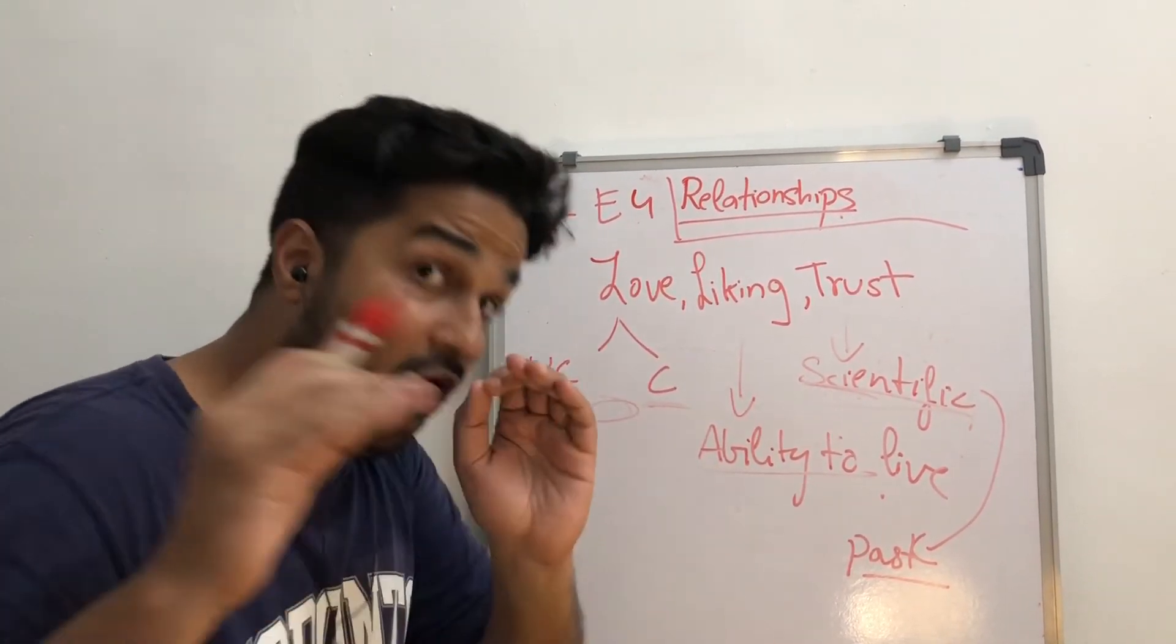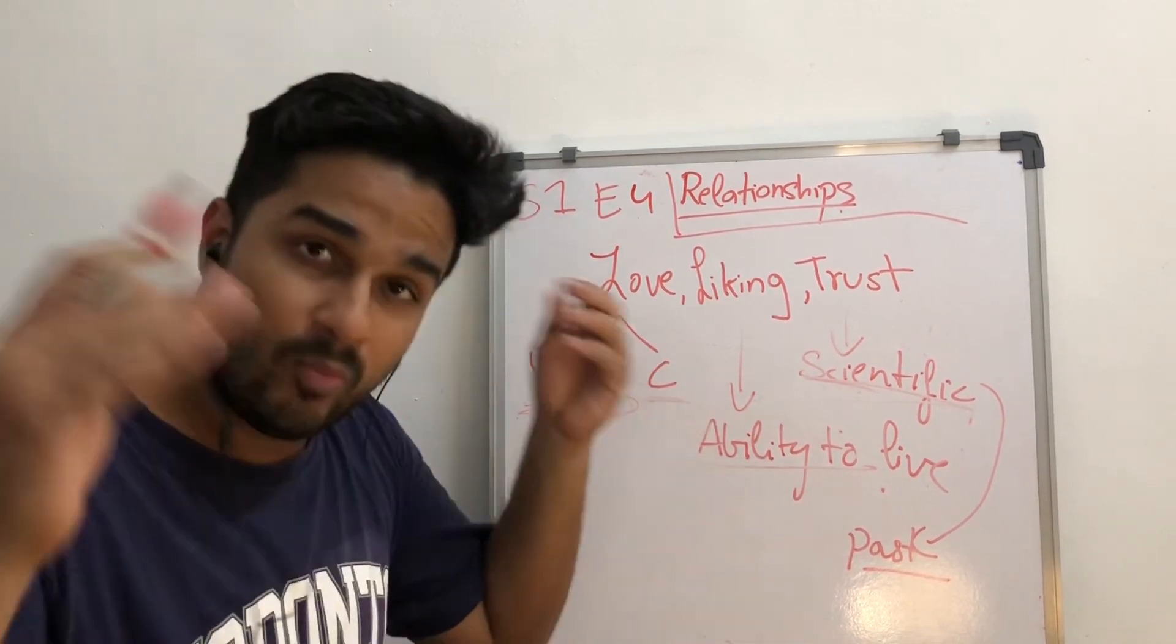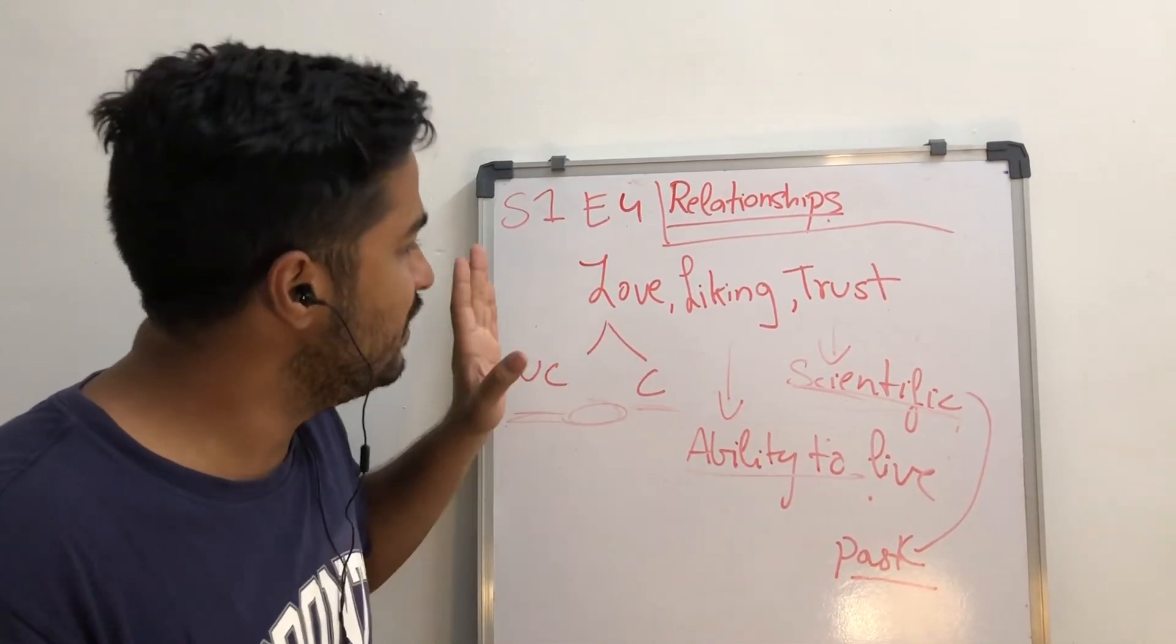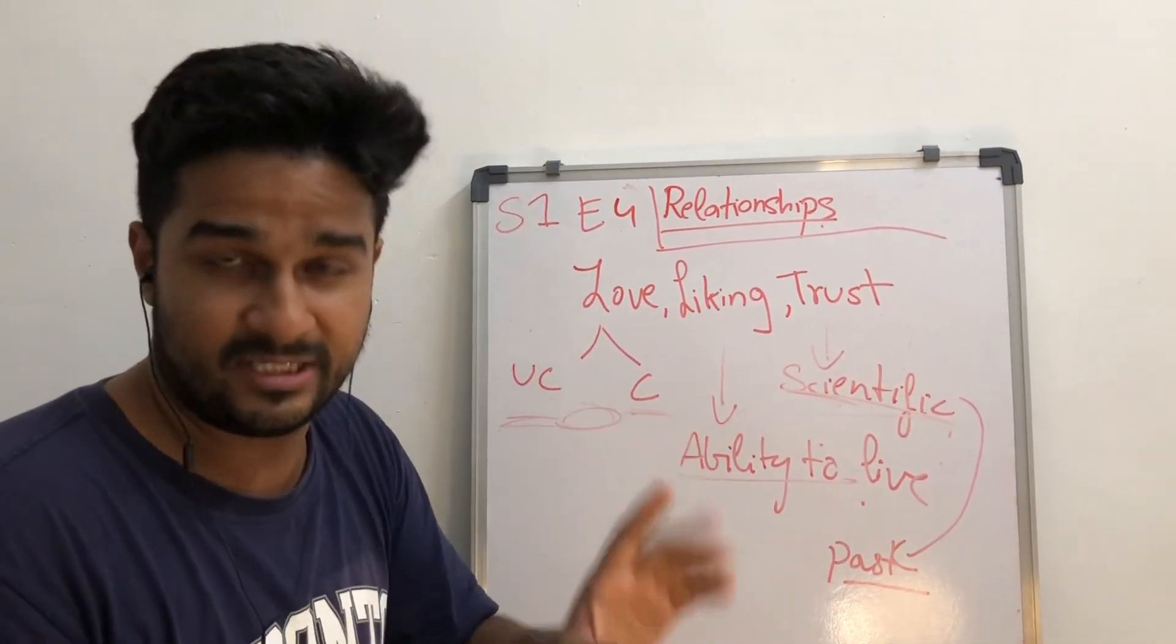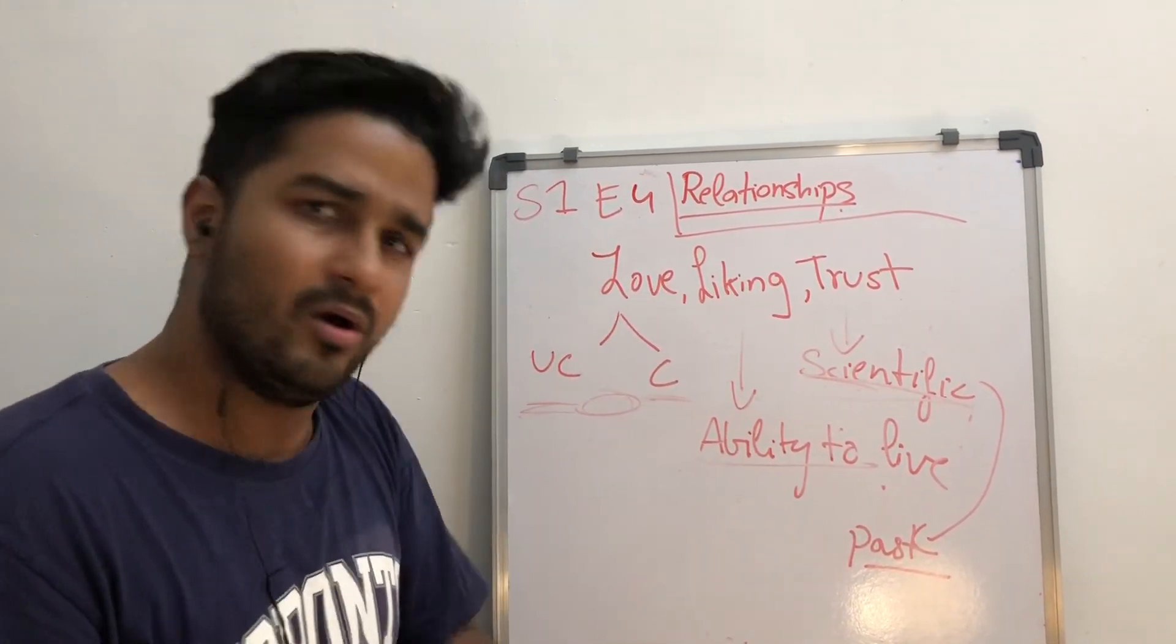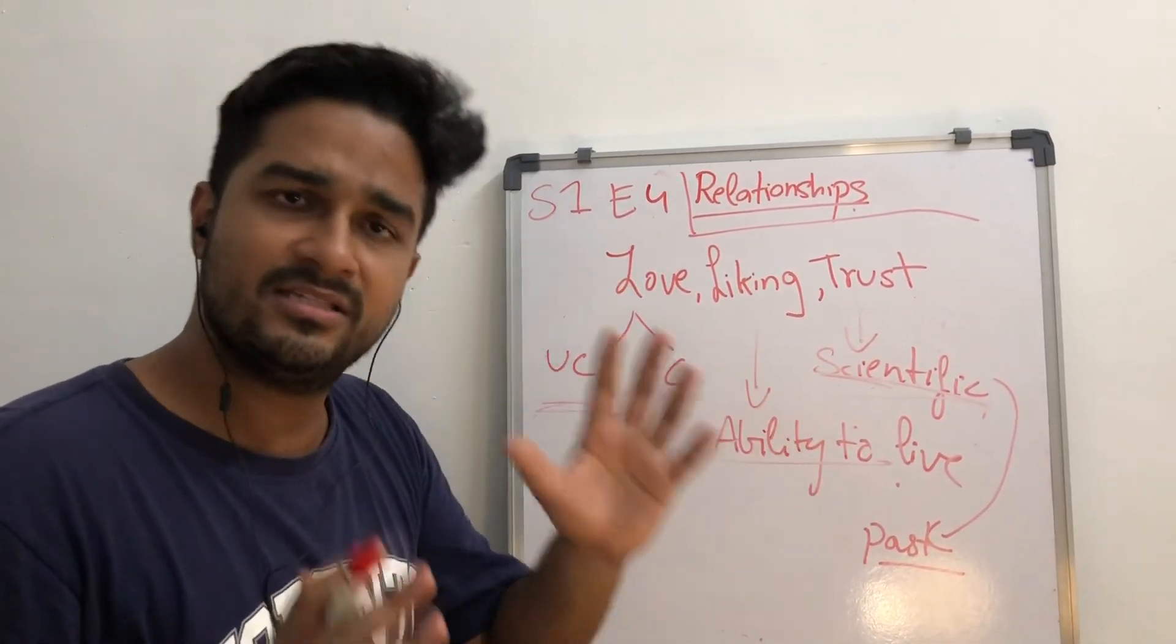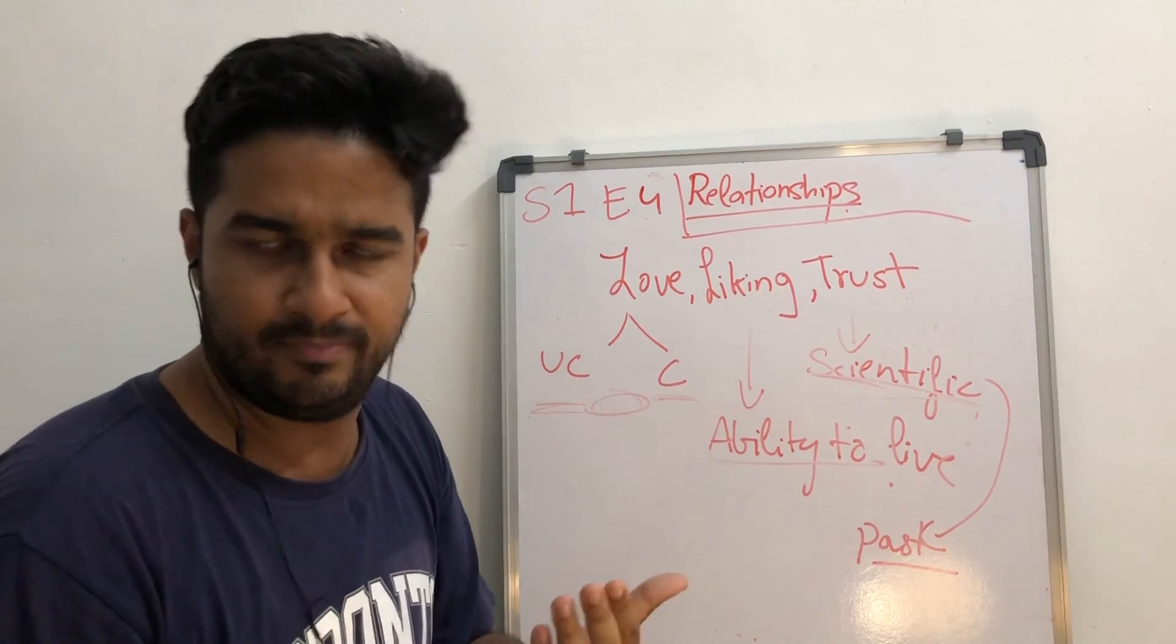You cannot love, like, and trust a person 100%. If you do, you are defrauding yourself or you are defrauding the person. So just be aware of this, realize where you are, and use these things to make your relationships better.